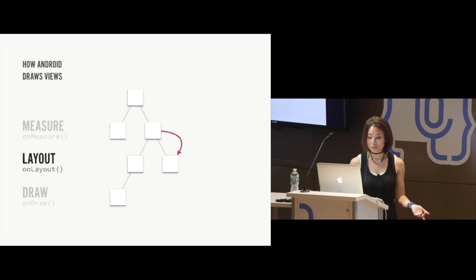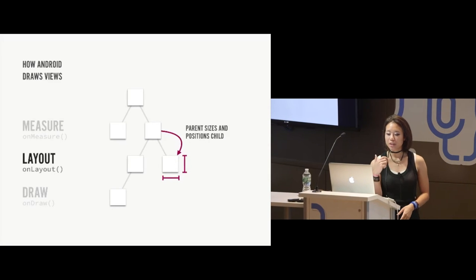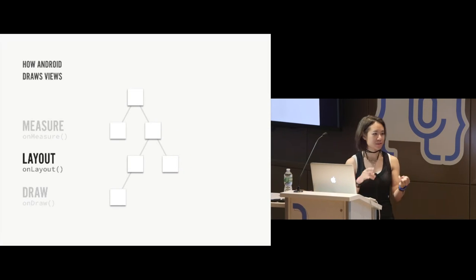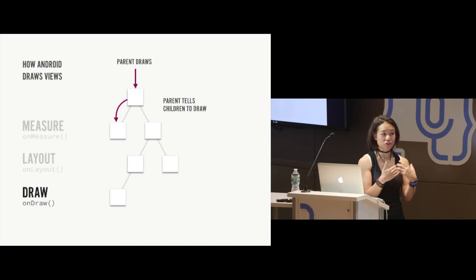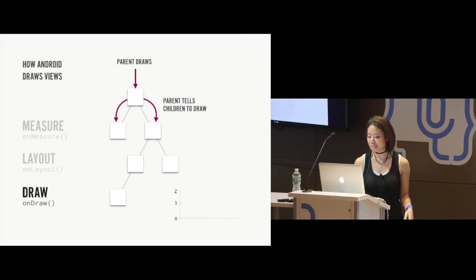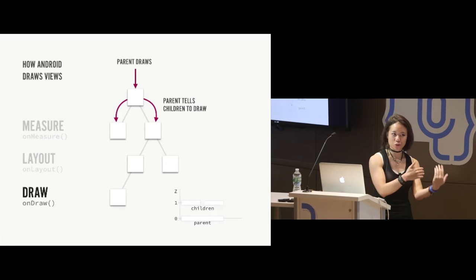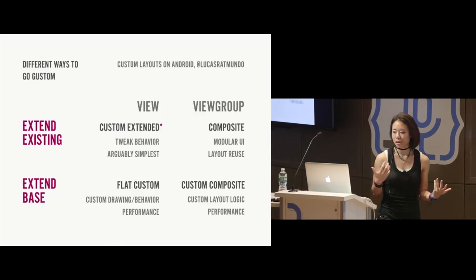In the layout phase — again, depth-first traversal from root to children — each parent decides the final size and position of each child on the screen. Finally, once everything has been measured and laid out, everything can be drawn. Starting from parents and going to children, each parent view draws itself and then requests that each child does the same. An interesting side effect is that because the parent draws first, it ends up on the bottom — children are drawn on top of the parent.